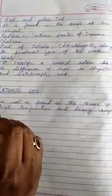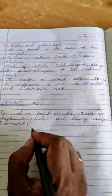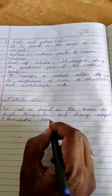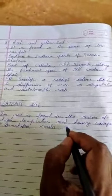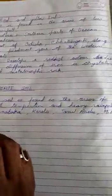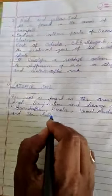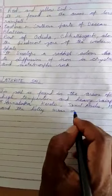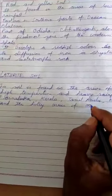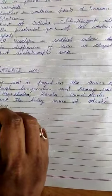Where do we find this heavy rainfall and high temperature? These are the areas of Karnataka, Kerala, Tamil Nadu, MP, and the hill areas of Odisha and Assam.